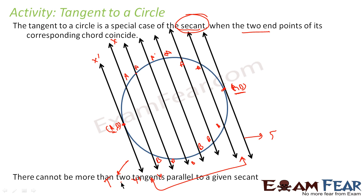Also, there cannot be more than two tangents parallel to a given secant. If you see, these are all parallel lines. Parallel to a given line PQ, we can have only two tangents. Logically, parallel to this line you will have only two points on the circle, and from these two points you can get only two tangents. So if a line is given and we are told to draw parallel tangents, we can draw only two parallel tangents.